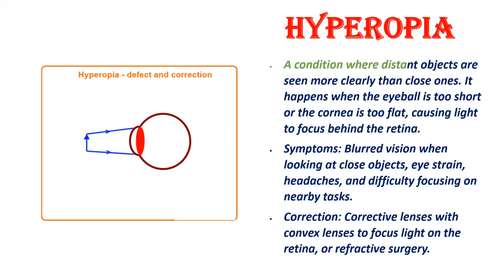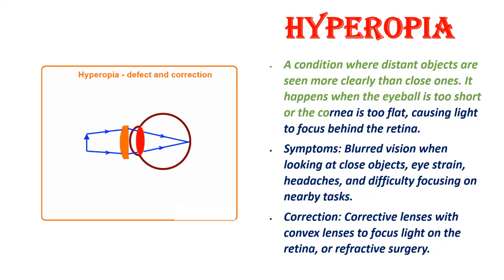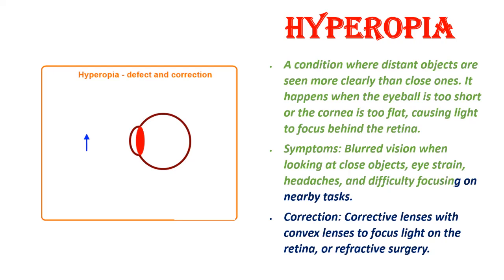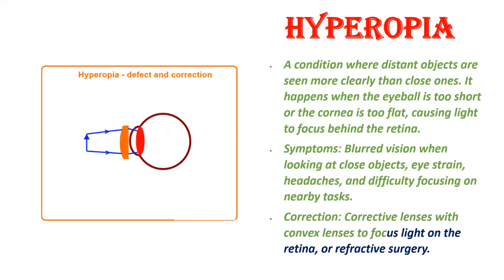Hyperopia (farsightedness): A condition where distant objects are seen more clearly than close ones. It occurs when the eyeball is too short or the cornea is too flat, causing light to focus behind the retina. Symptoms include blurred vision for close objects, eye strain, headaches, and difficulty focusing on nearby tasks. Corrective lenses with convex lenses or refractive surgery can be helpful.